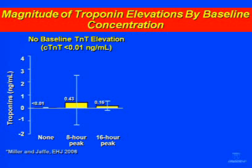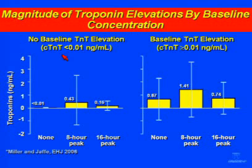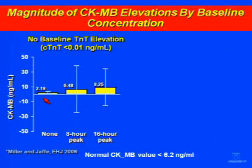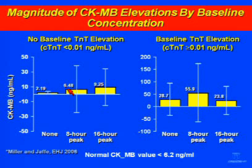These are data from the Mayo Clinic database. If you have a normal baseline troponin defined at the 99th percentile, you have very minor elevations in troponin. Look how much greater they are if you have an elevated value at baseline. The same thing for CKMB: if you have a normal baseline—our normal value at Mayo is 6.2—you barely have an increase. But look what happens if you have an elevated baseline. So a substantial percentage, most likely, of the acute event contributes to whatever elevations we see.